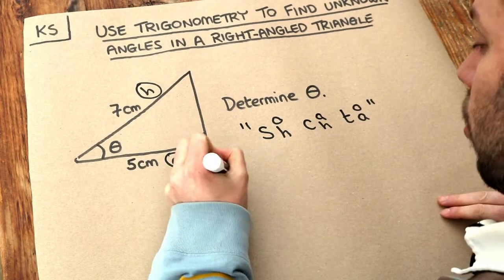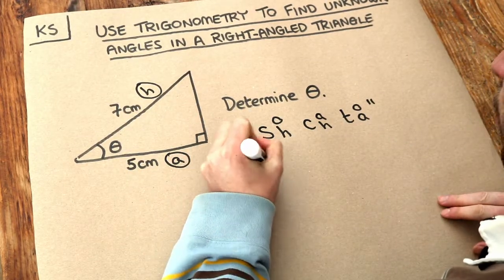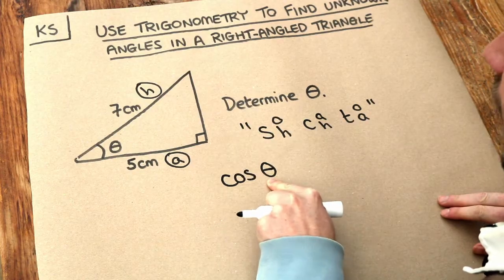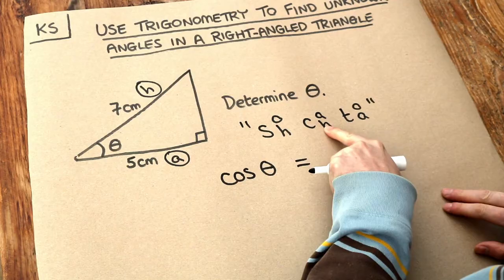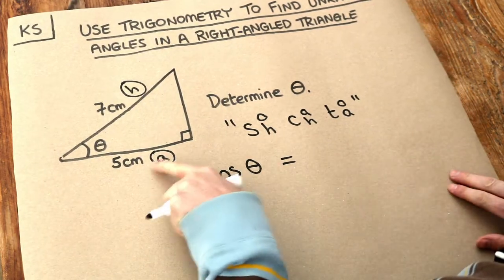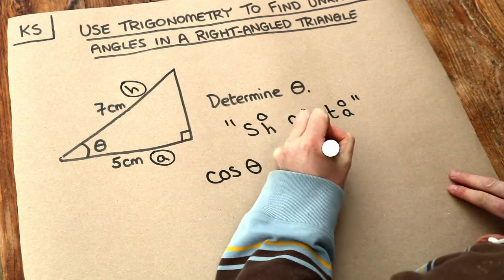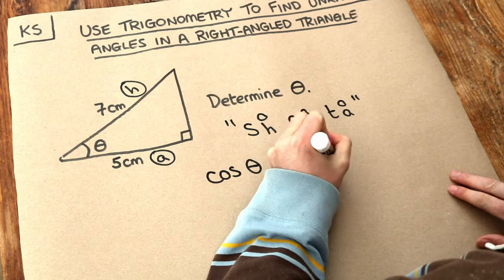So we write out a formula. Cos of the angle - remember it's always cos of the angle, sine of the angle, tan of the angle - is equal to adjacent over hypotenuse. So that's adjacent of 5 over the hypotenuse, which is 7.